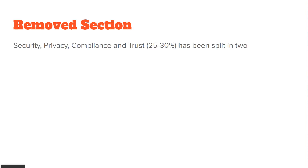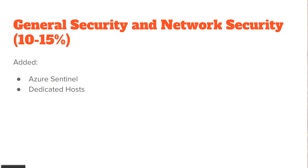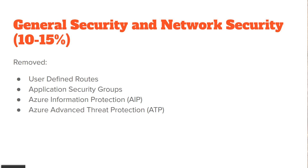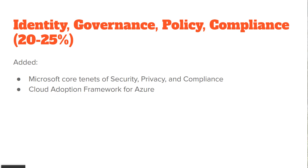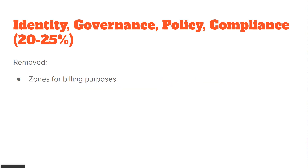What used to be the security, privacy, compliance, and trust section has been completely split into two — so we can treat these as two new sections. One is the security section on its own, worth 10 to 15%. A couple of new topics: Azure Sentinel and Azure Dedicated Hosts. What they've removed are some of the more advanced items: user-defined routes, application security groups, AIP and ATP — those are no longer covered by this exam. The second half has been split into identity, governance, policy, and compliance. New items to this section are Microsoft's core tenants of security and the Cloud Adoption Framework. Only one thing has been removed: zones for billing purposes.